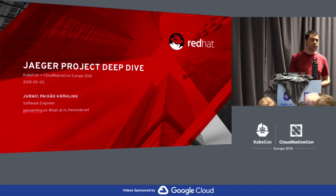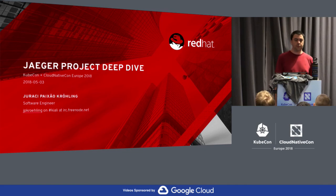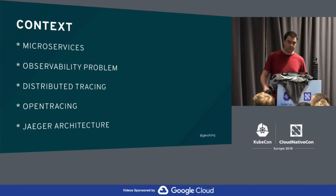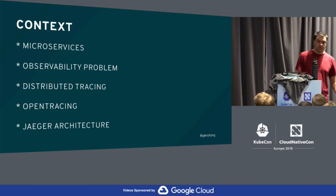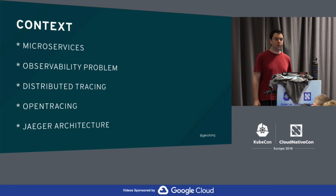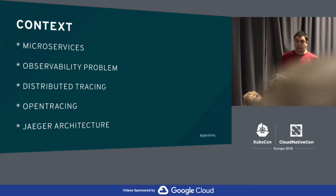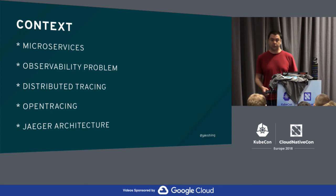How many of you were here yesterday for the project intro? Good. So just like yesterday, I'm starting with some assumptions about your knowledge. We have only 35 minutes again, so I'll move relatively quickly and I'm starting from where I left yesterday. For those who were not here yesterday, our context here for Jaeger is microservices — we are solving the observability problem, more specifically we are one of the pillars of observability.